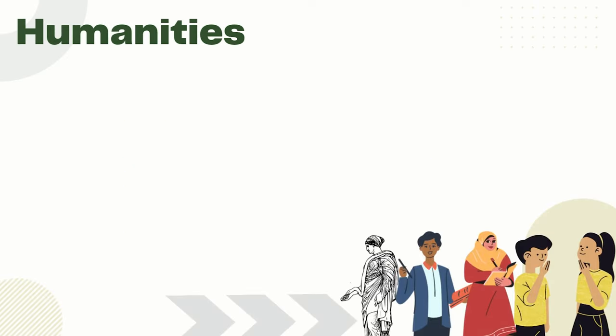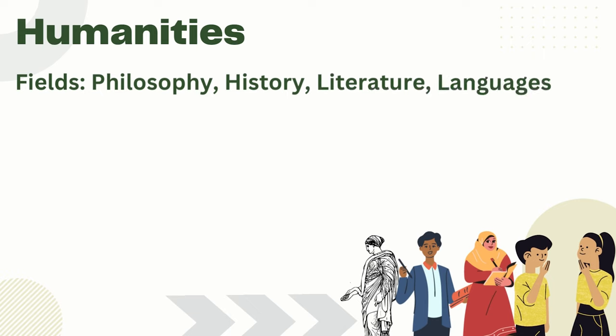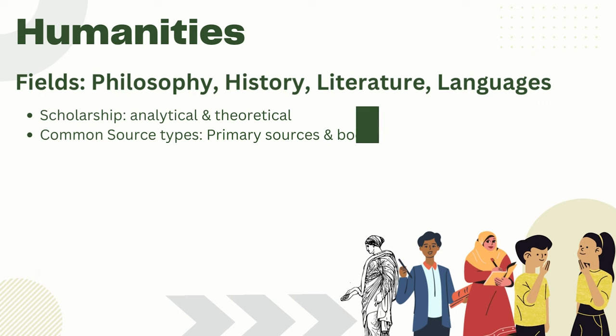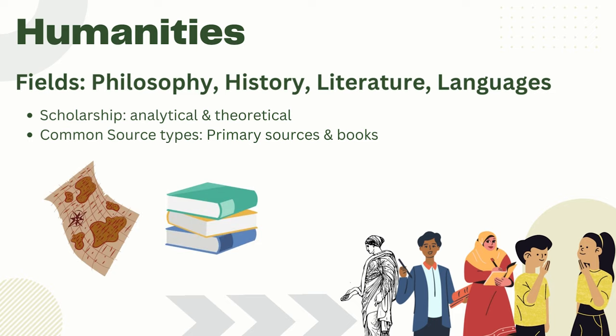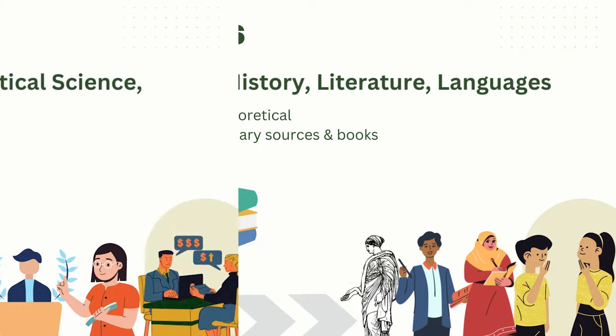Now let's talk about humanities. In humanities we have the fields of philosophy, history, literature, and languages. Much like the arts, scholarship is often analytical and theoretical rather than experimental. Primary sources and books are important source types for conducting research.